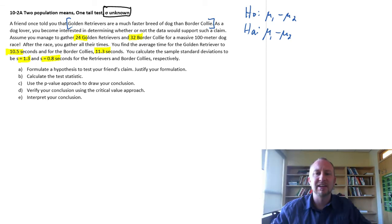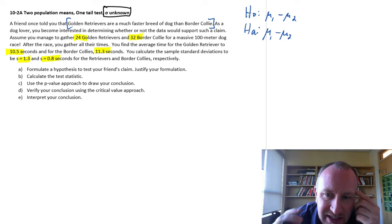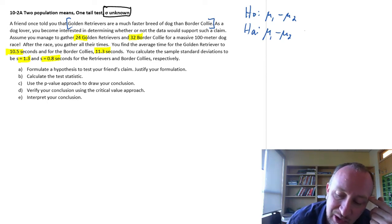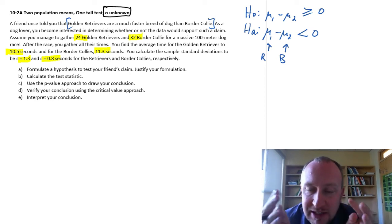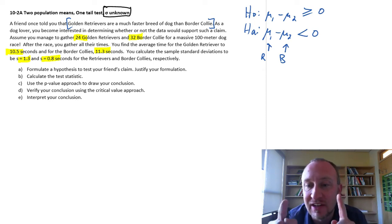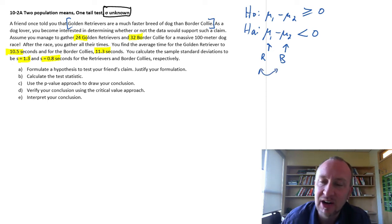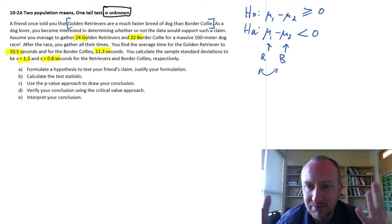If I'm thinking I want to test that one is faster than another then I want to test that its time is smaller than the other. So to me in my mind that sounds like a lower tail test which is dependent on this being the golden retrievers and this being the border collies. So again I am formulating this as a lower tail test based on those definitions. You could write this as an upper tail test and you would just have to switch these around.